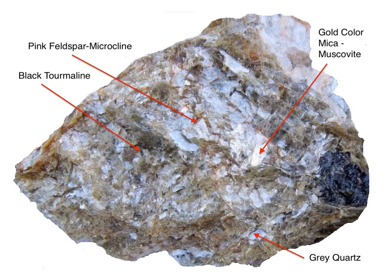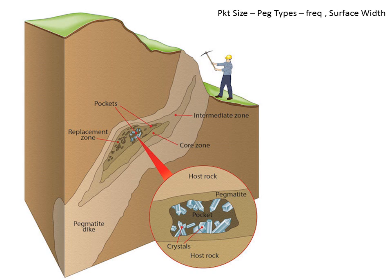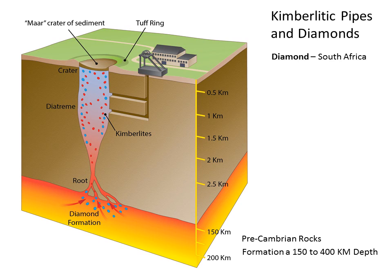A typical pegmatite has quartz, muscovite, black tourmaline, and feldspar. If you're a miner, the goal is the gem pocket in the core zone — that's what you're looking for: pockets where you might find tourmalines, beryls, or other gemstones. The pegmatite cools from the outside in and gets more concentrated toward the center, layering the minerals progressively.